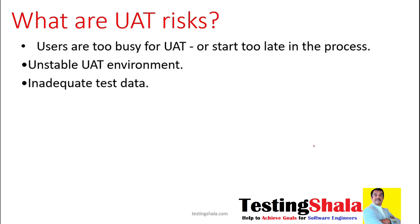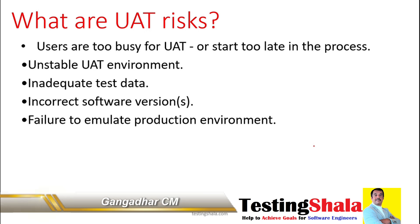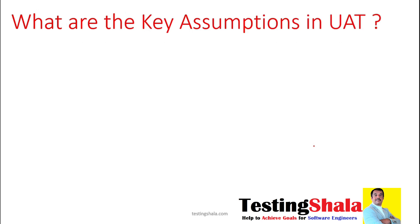The fourth risk is incorrect software versions — especially when there is integration or when multiple software versions are being integrated, we may see this risk. The fifth risk is failing to simulate or emulate the production environment properly, which sometimes causes a lot of failures. There is also a lack of human resources, since performing UAT requires people with both business process knowledge and functional knowledge, and getting that kind of resource is not easy.